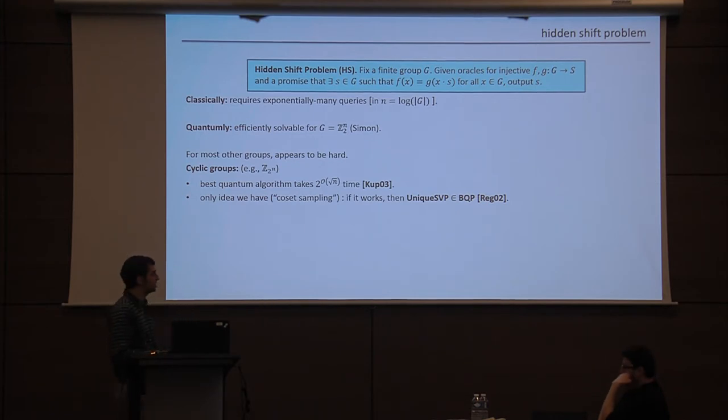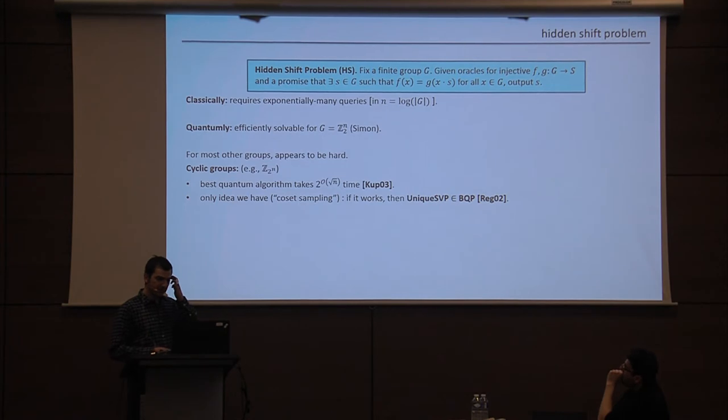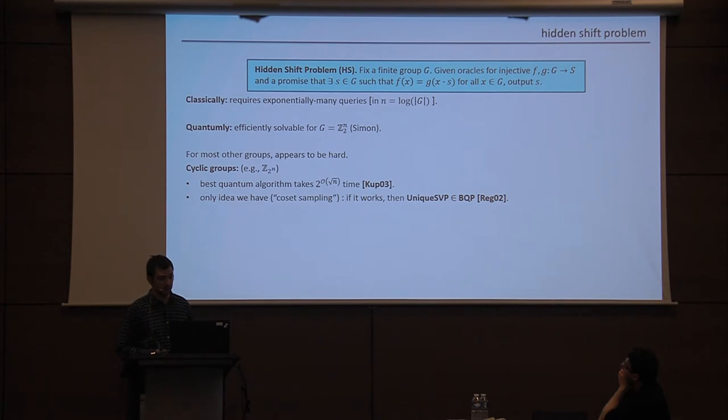So on cyclic groups, the best-known algorithm takes time 2 to the root n. This is the Kuperberg sieve. And this is still the best-known algorithm, and it's certainly not for lack of trying, because we know from a result of Regev from 2002 that if we could make basically our only idea for this problem work, this is called coset sampling, then we would put unique SVP into quantum polynomial time. And when I say this is our only idea, I really mean this is our only idea. There are no other strategies that have made any progress whatsoever. In some group families, this coset sampling thing makes quite a bit of progress, and it's a natural generalization of what happens in Shor's algorithm. But besides that, we have no other ideas. And then you can go to more complicated groups like symmetric groups, where we really have no idea what to do. We don't have any even sub-exponential time algorithms, and we have quite a few negative results saying that this coset sampling strategy is probably not going to go anywhere.